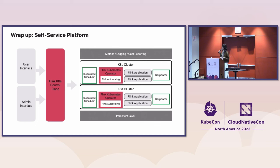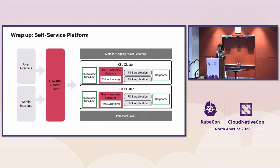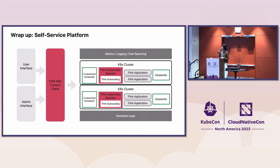We're almost out of time, so a quick wrap-up. For our self-service platform, everything comes together in one diagram: a user interface for both user and admin experience, interacting with the Flink control plane through multiple client toolings. On the backend, we have components including the custom scheduler, the Kubernetes operator with all scaling implemented, and the Flink applications. We're happy to open for questions.